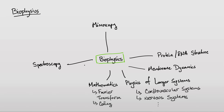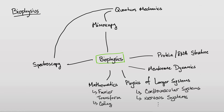For example, if we take microscopy, there's a lot of Fourier transform mathematics involved. And to give a sense of how nuanced this can get — there's quantum mechanics involved in understanding how electron microscopy works. Quantum mechanics also plays a role in spectroscopy, when we talk about quantum yields and related concepts. So you can start to see how this large picture of biophysics comes together.